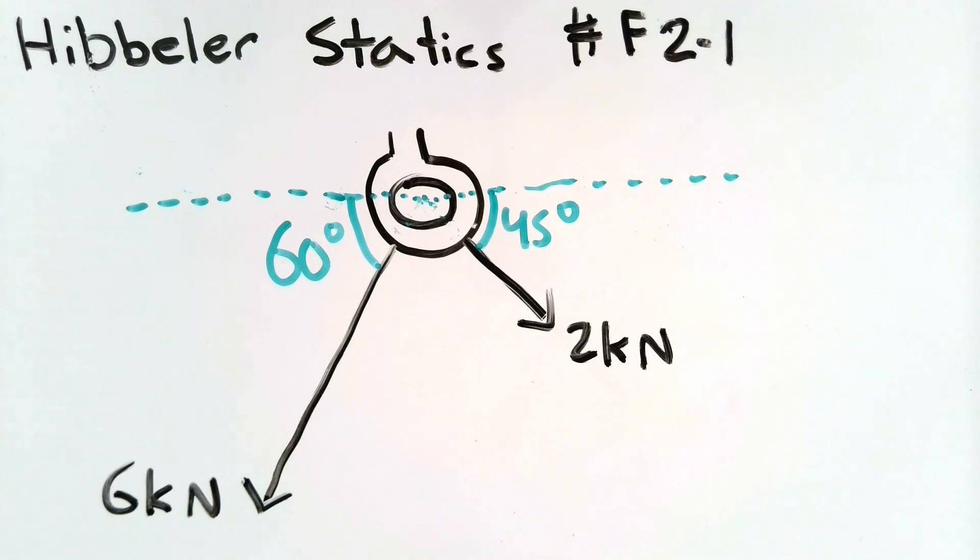Now in this problem we have a ring that's being exposed to two forces. A 2 kilonewton force angled at 45 degrees from the horizontal clockwise and a 6 kilonewton force angled at 60 degrees from the horizontal. Now the question is what is the resultant force from these two forces that this ring experiences.